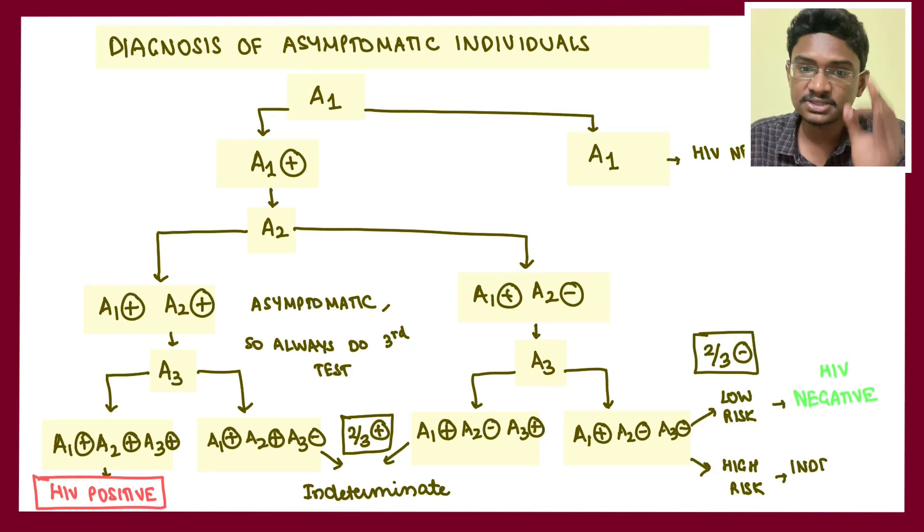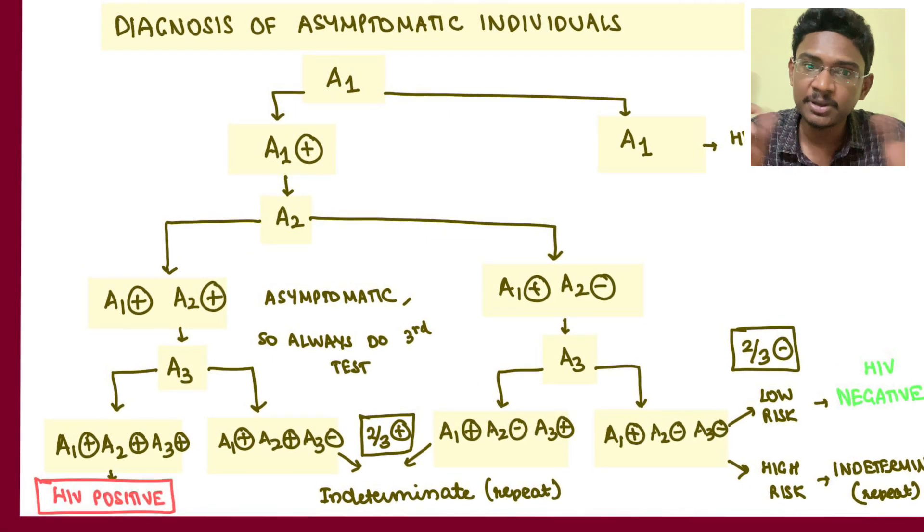If third test comes out negative, you should see whether the patient is a low risk or high risk patient. If the patient is a sex worker, has high risk for transmission of HIV, or has needle stick injury with HIV patient, these come under high risk. For high risk patients, repeat the test. For low risk patients, report as negative. Reporting here depends on clinical history taking.